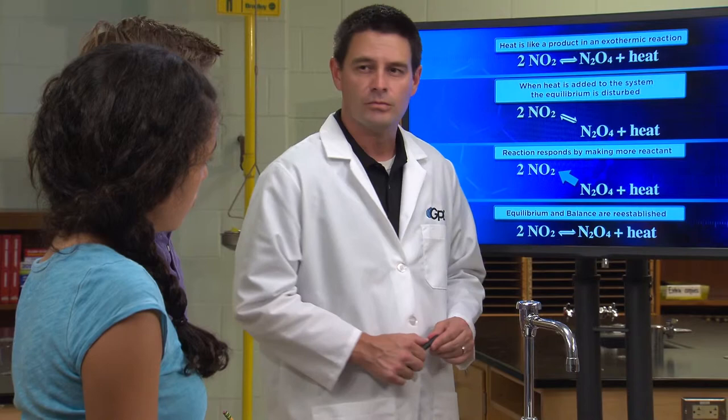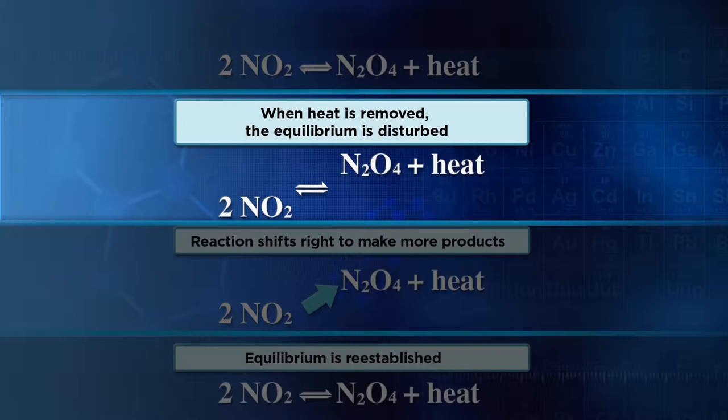Let's see. When we cool the reaction, heat's being removed. And since that's a product in our reaction, removing it means the equilibrium is disturbed. So the reaction would make more products and more heat to replace what was lost. Is that right?